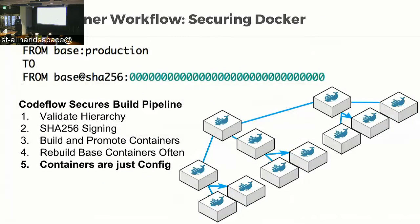CodeFlow is a build pipeline that also builds all of our Docker containers. A lot of people base Docker containers on publicly hosted containers using tags — but a tag can change. If someone was able to compromise a Redis container, for example, they could rewrite it to include a reverse SSH shell. So we validate the entire hierarchy: we make sure everything inside Docker is built using CodeFlow, we validate the SHAs, and after testing we can promote a particular Docker SHA to be the base image and rebuild all containers underneath it. We recommend using SHAs rather than relying on tags like 'master' or 'v1' because those can change without you knowing.